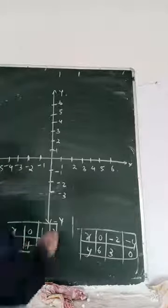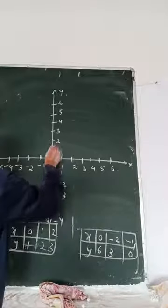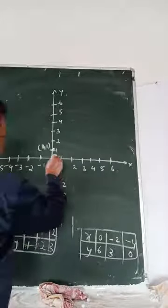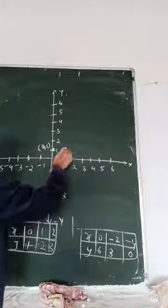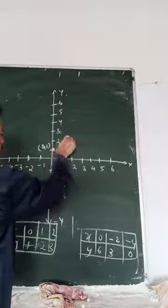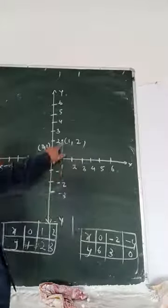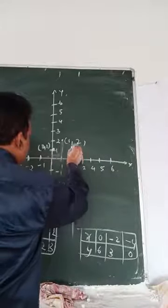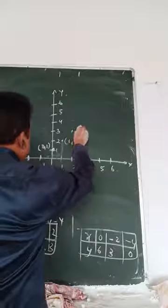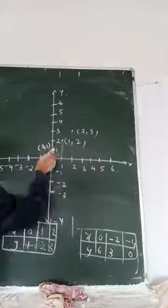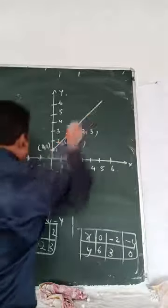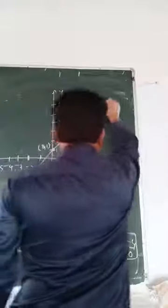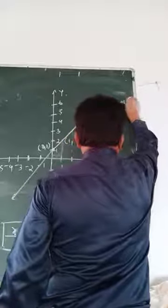Now plot the first equation. x equals 0, y equals 1 — that is the point (0, 1). x equals 1, y equals 2 — plot point (1, 2). x equals 2, y equals 3 — go up to point (2, 3). Join these 3 points; you will get a straight line. Extend the line on both sides. This is the graph of x minus y plus 1 equals to 0.